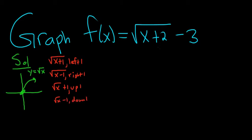In this particular problem, we're adding 2 to the x, so it'll be backwards, left 2. Then we're subtracting 3 from the entire thing, so down 3.